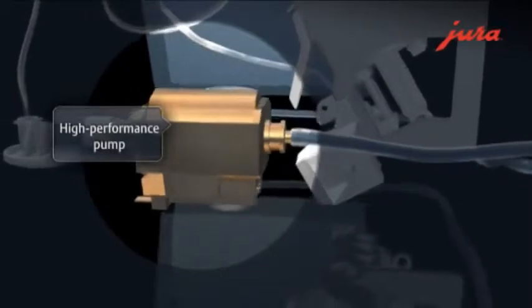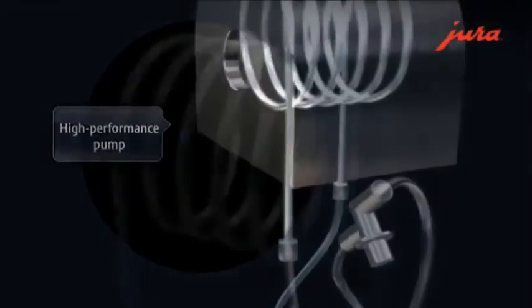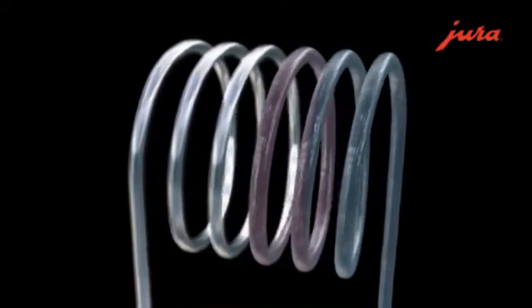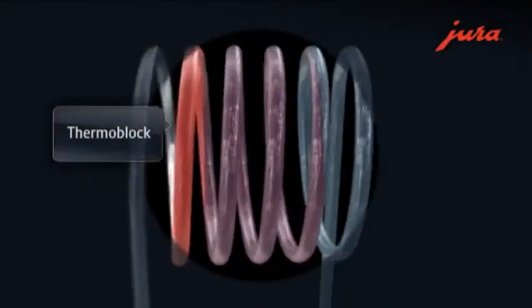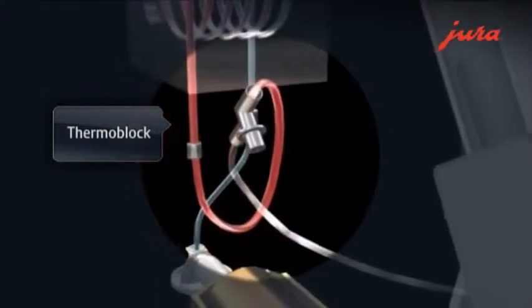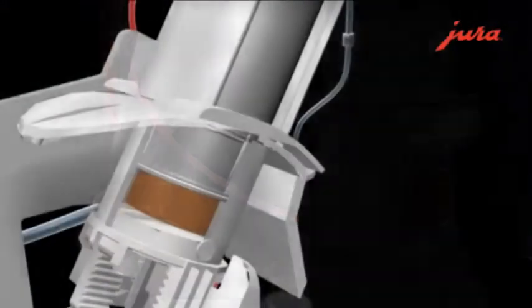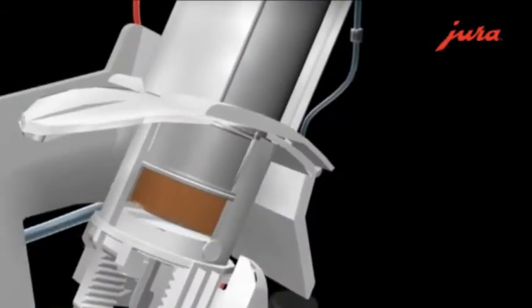During pre-brewing, the high-performance pump forces the water through the thermoblock where it is freshly heated. The thermoblock is the heating element in a Jura fully automatic coffee machine. The machine freshly heats up only the actual quantity of water needed to make the coffee.